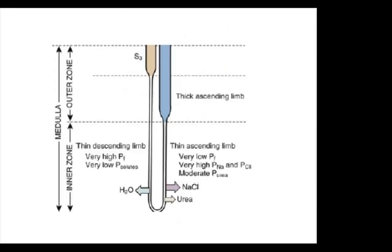After the proximal convoluted tubule comes the loop of Henle, comprising the thin ascending limb, the medullary thick ascending limb, and the cortical thick ascending limb. Although each segment differs in specific activity, the overall function of the loop of Henle is reabsorption of 25–30% of filtered sodium and creation of a highly concentrated medullary interstitium, which is the basis for countercurrent exchange. The thin descending limb is highly water permeable, whereas the thin and thick ascending limbs are water impermeable.